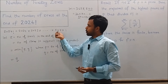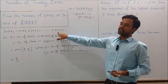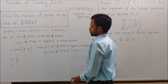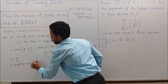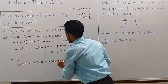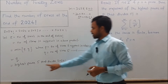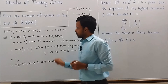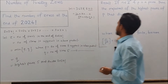So the number of zeros at the end of 2024 factorial equals q, where q is the number of times 5 appears in the product. This quantity equals the highest power of 5 that divides 2024 factorial. So to find z we need to find this quantity, and we will use the following result.